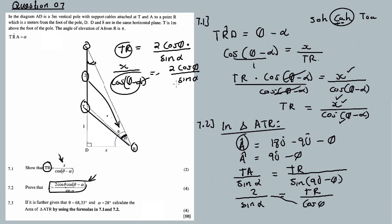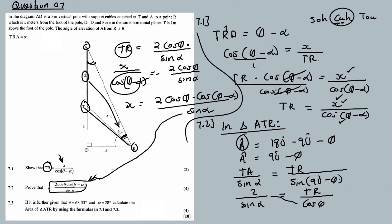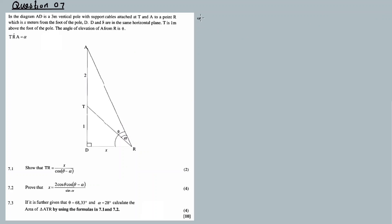Moving on to 7.3. We have to calculate the area of triangle ATR. We are further given that theta equals 68.33 degrees and alpha equals 28 degrees. We need to calculate the area of ATR by using the formulas from 7.1 and 7.2. It's just a matter of substitution. In order to calculate the area, I will use the area rule.